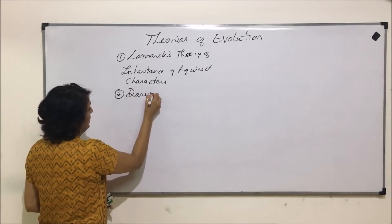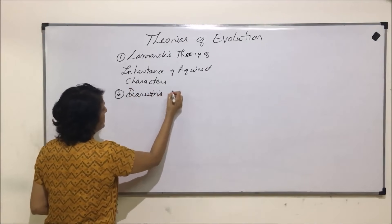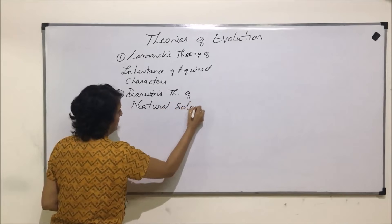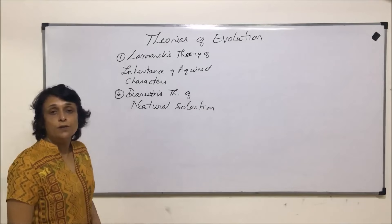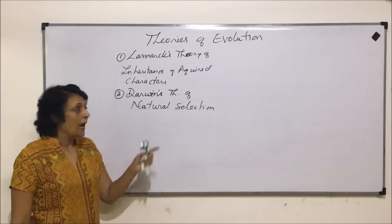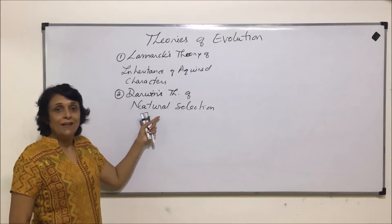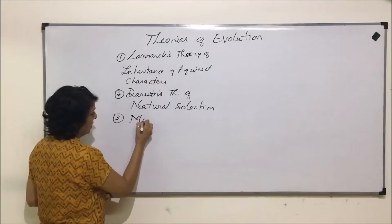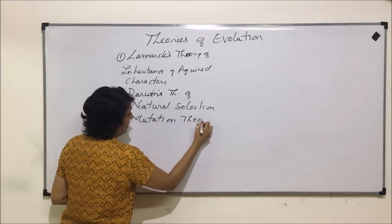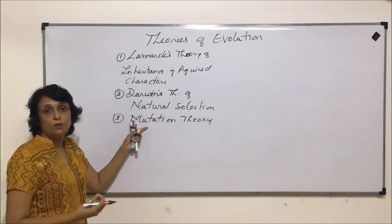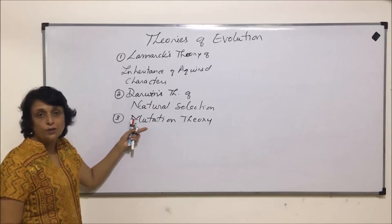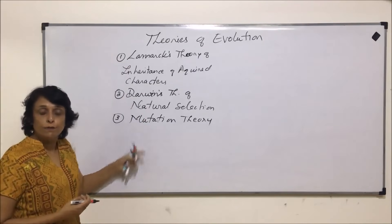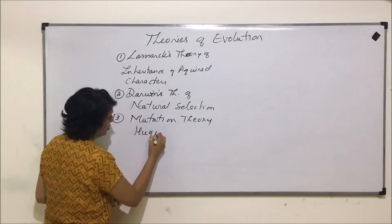The second theory is Darwin's theory of natural selection. According to Darwin, whatever changes an organism has — which we call variations — whichever variation is most suitable is selected by nature. The third theory is the mutation theory, based on the principle that there is a sudden change called mutation, and because these mutations are inherited, this is what leads to evolution. The scientist who gave this theory was Hugo de Vries.